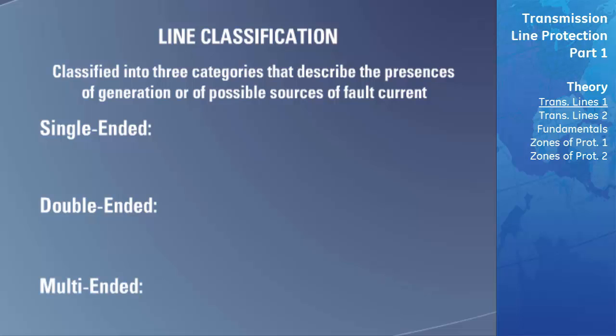A single-ended line, also called a radial line, has a source at only one end. This type of line is used to deliver power from the source to a load at the other end of the line. Obviously, whenever a fault occurs, there is only one source of current to feed the fault.